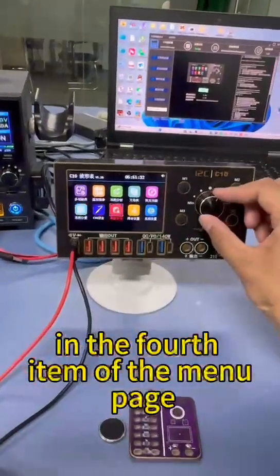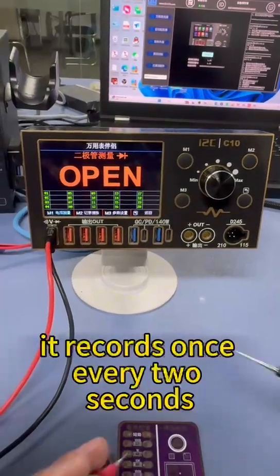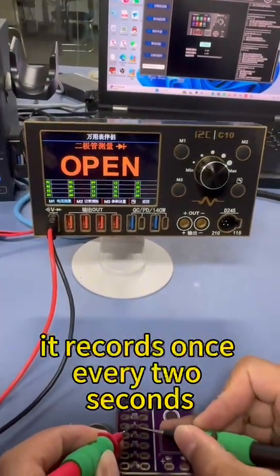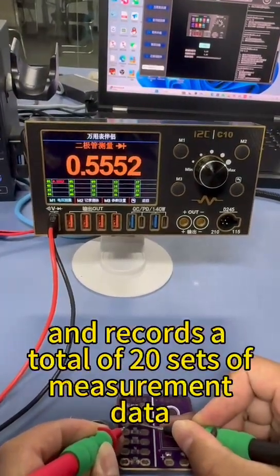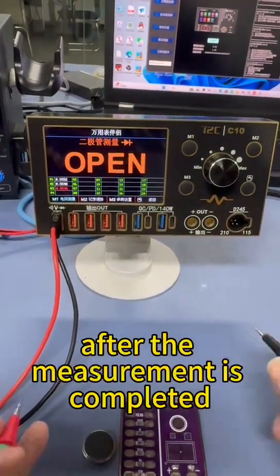In the fourth item of the menu page, the multimeter APP can record test data. It records once every two seconds and records a total of 20 sets of measurement data. It will automatically record after the measurement is completed.